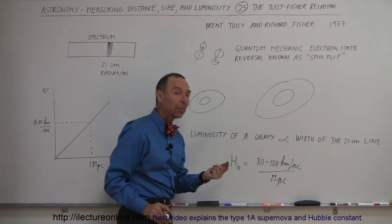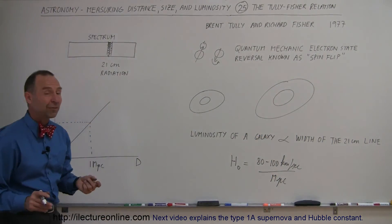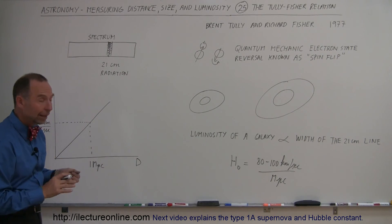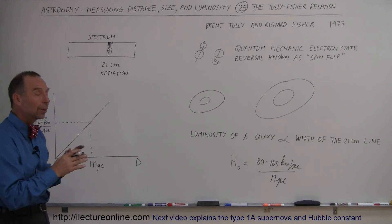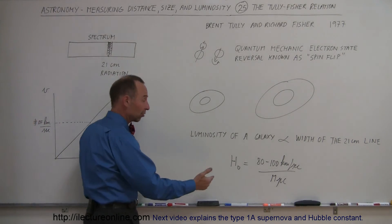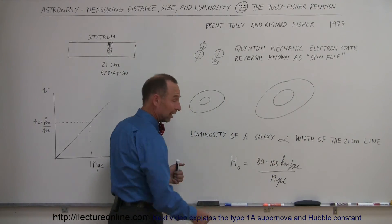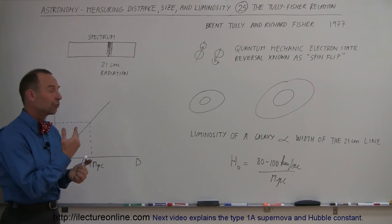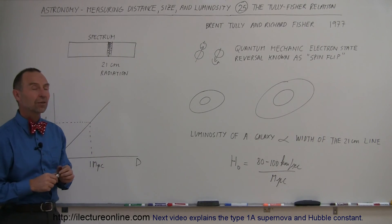Notice that when Hubble came up with his constant, it was around 500 or 550. With Tully and Fisher, we were able to narrow that down to between 80 and 100. Still not correct, because today we know it's much closer to 73. But it was a nice improvement, an independent way of measuring the Hubble constant accurately.